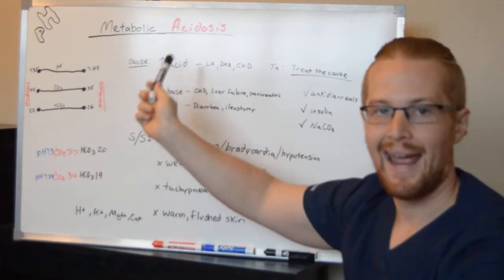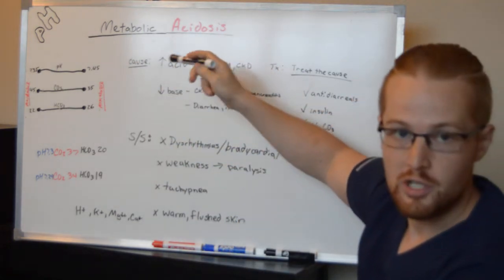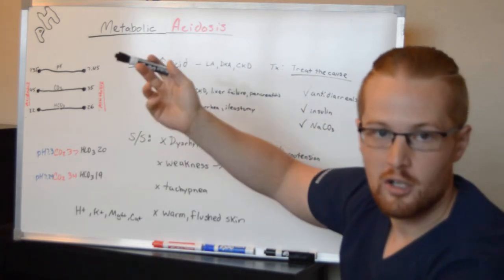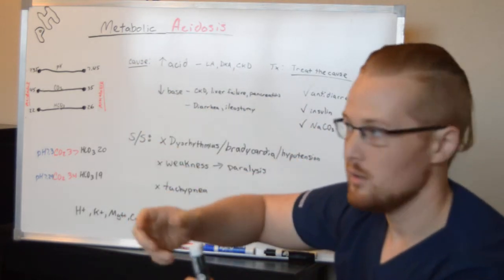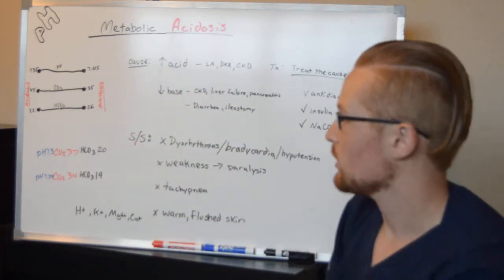Let's talk about metabolic acidosis. This is acidosis, which is too much acid or not enough base in the blood, and it's due to metabolic causes as opposed to respiratory causes.